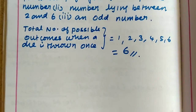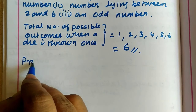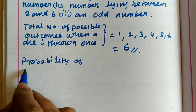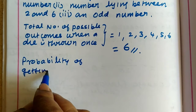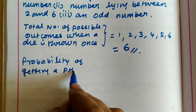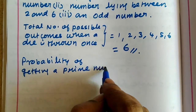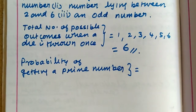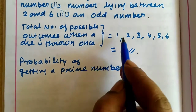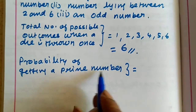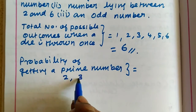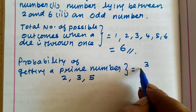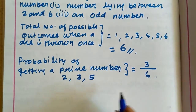The probability of getting a prime number — prime numbers are 2, 3, 5, which are numbers divisible by 1 and the number itself. There are 3 favorable outcomes, so the probability is 3 by 6, which equals 1 by 2.